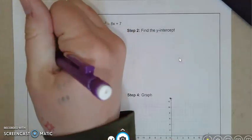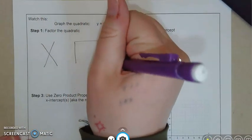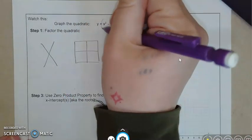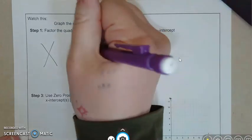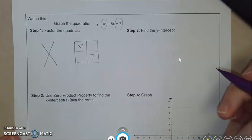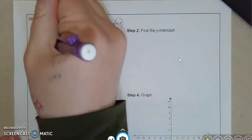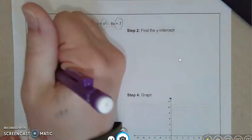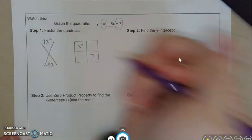So we're going to need to take this equation and factor it. The method I use is the x-box method. In this method we take our a and our c term and we put them on a diagonal to each other. We multiply them together and put them on the top of the x, and then we take the b term, negative 8x, and we put it on the bottom.